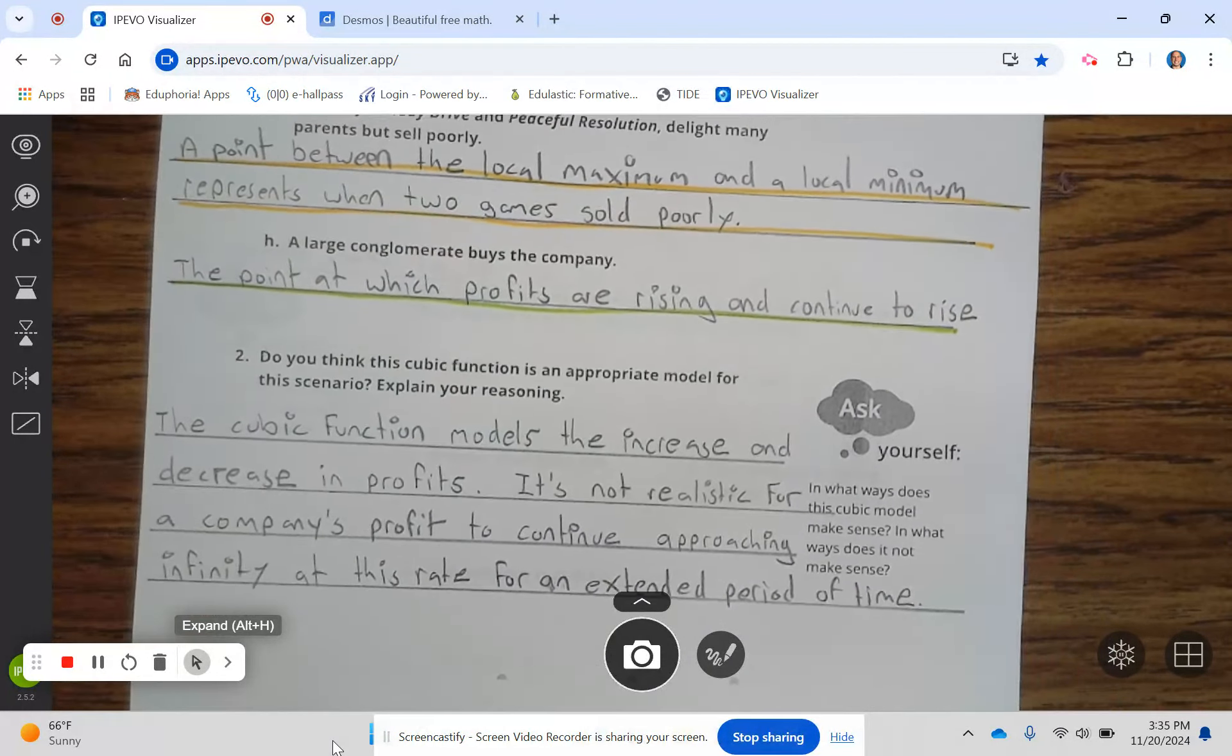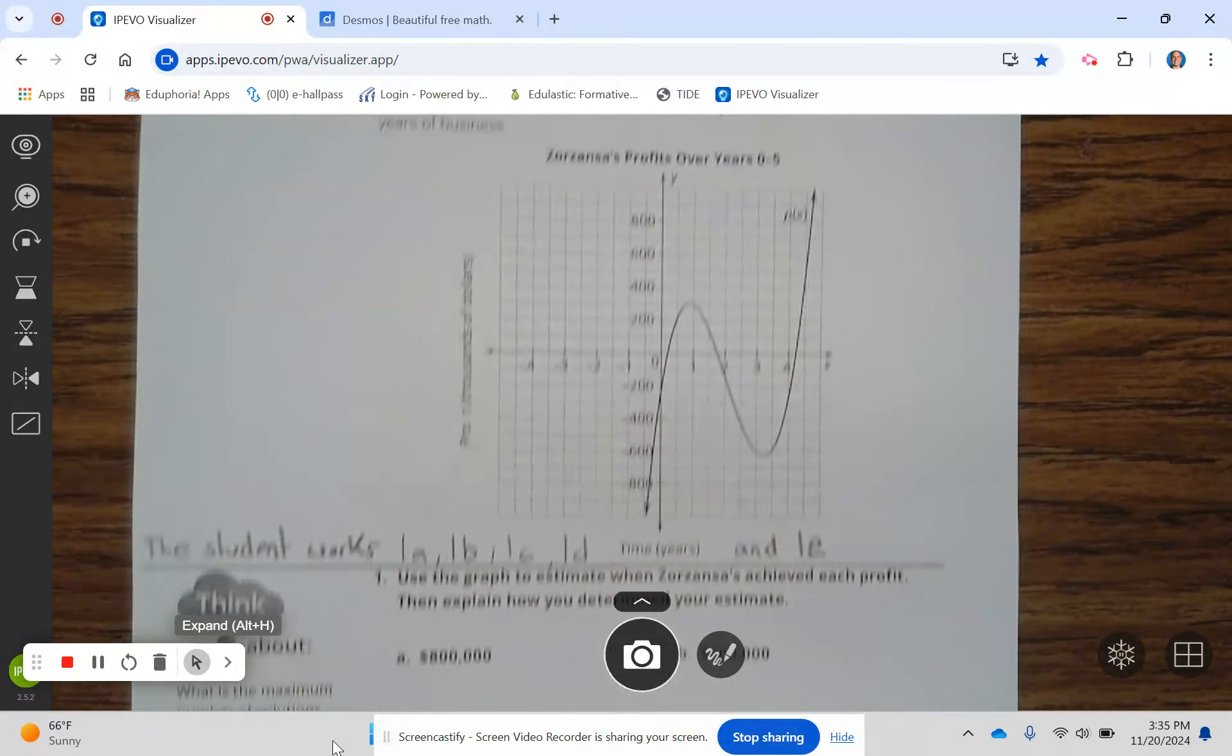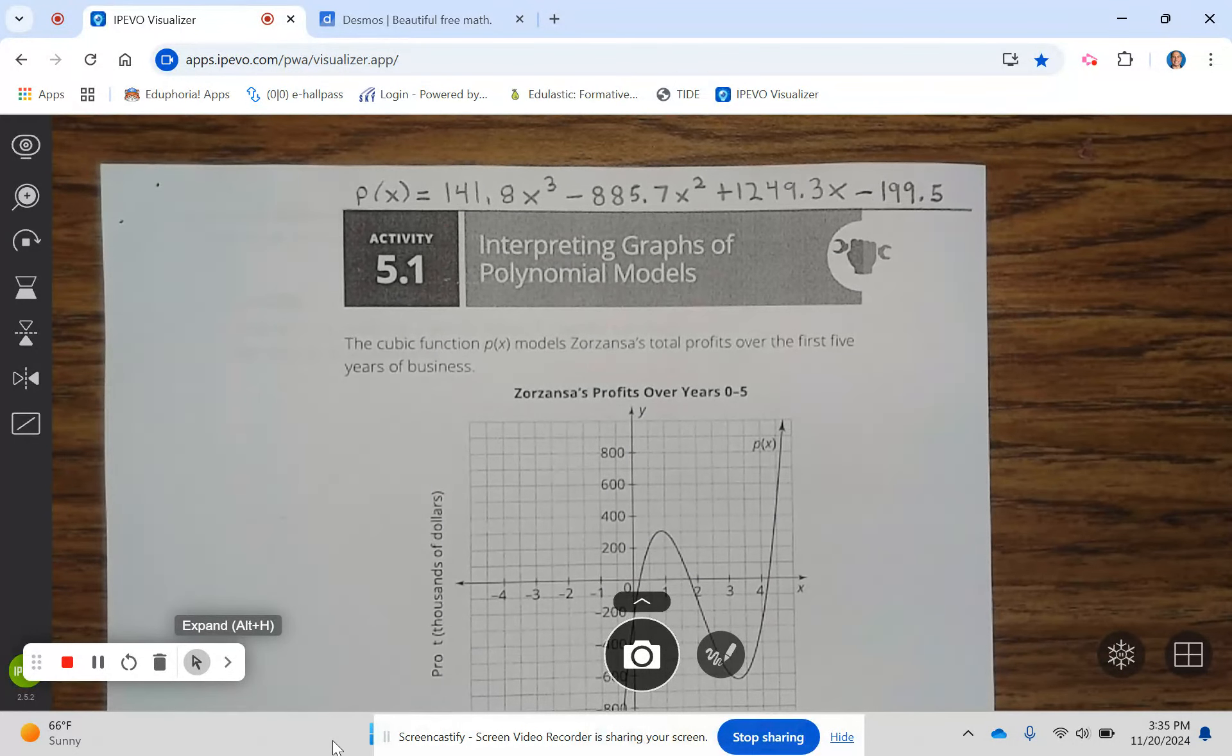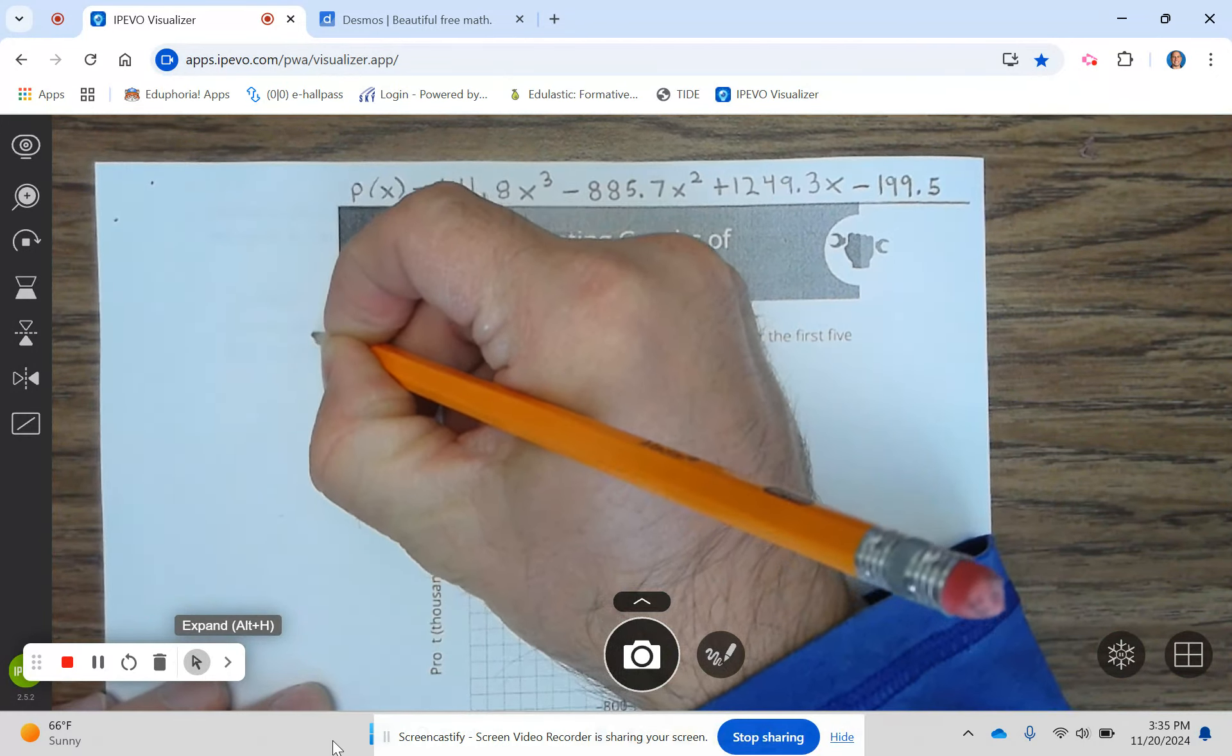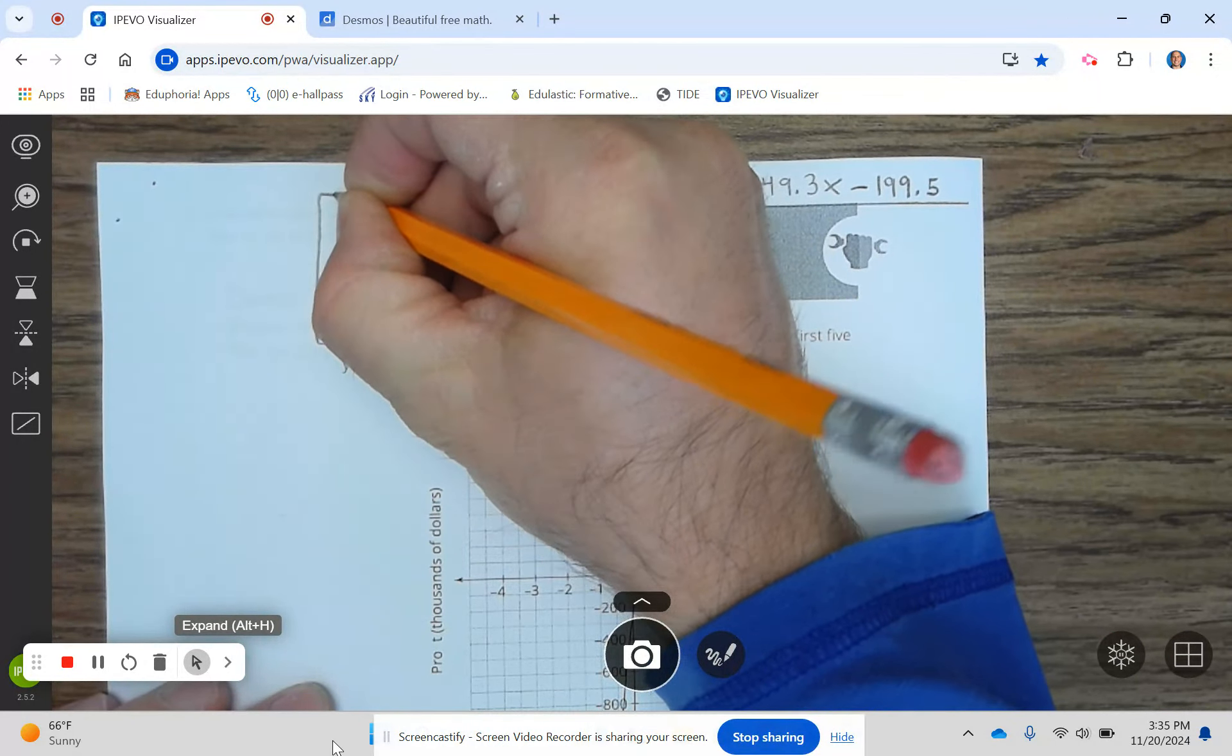5.1 Interpreting graphs of polynomial models. The cubic function P of X models the total profits over the first five years of business. Let's go ahead and write that down.